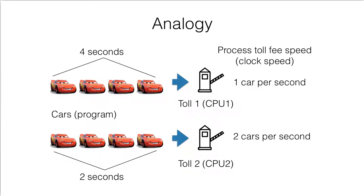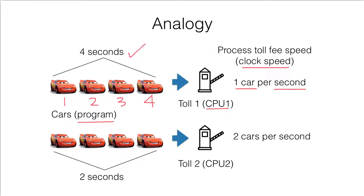Let us look at this analogy again. We have a program represented by four cars here — one, two, three, four. This is the CPU, the tow. The clock speed actually means the number of cars that can be processed in one second. Let's say this tow can process one car per second. That means if we have four cars, the total time to process the program will be four seconds.